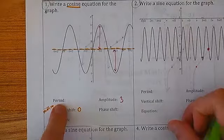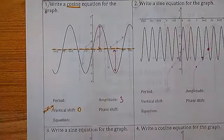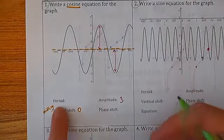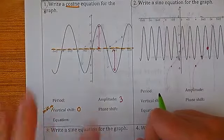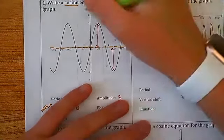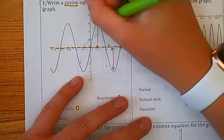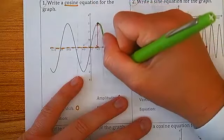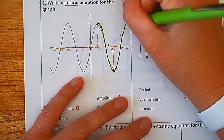Let's do the period next. The period is different from the b value — those are not the same thing. A lot of you on the test said they were the same. The b value helps you find the period using the equation 2π/b, but what you put for period is the actual size of the wave. Cosine hits a smile — it starts up, dips down past the midline to the bottom, curves back up through the midline and right back to the top.